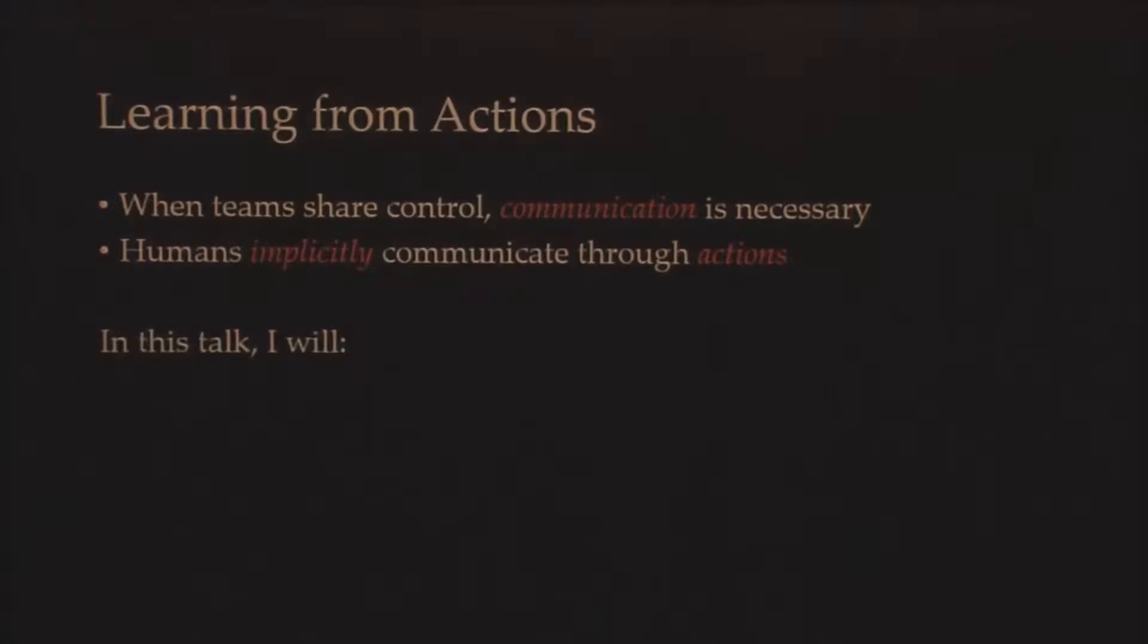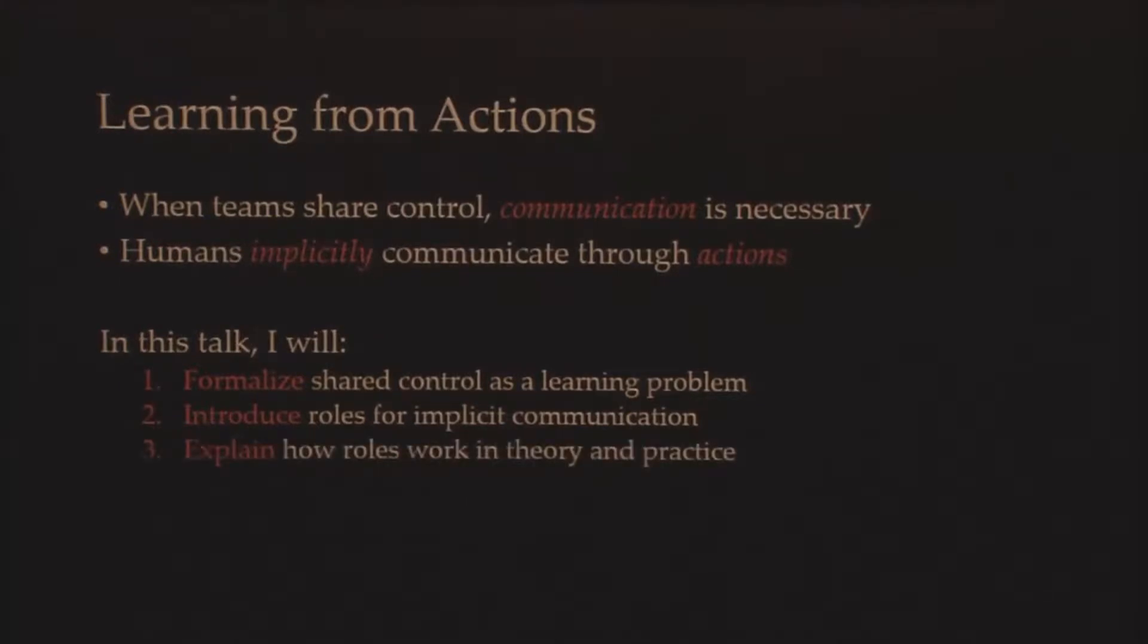So in my talk, I want to first formalize shared control as a learning problem, where I can take my partner's actions and learn from them about what I cannot see in the world around me. I also want to introduce roles, which we can use to enable implicit communication via actions. And then finally, I want to explain how these roles work, both in theory and in practice.